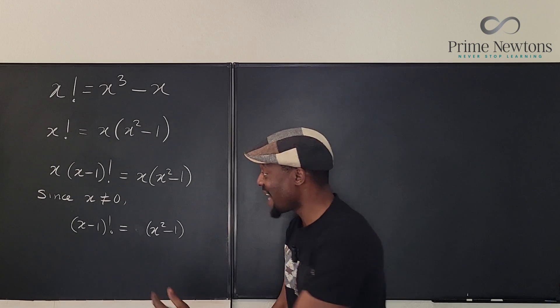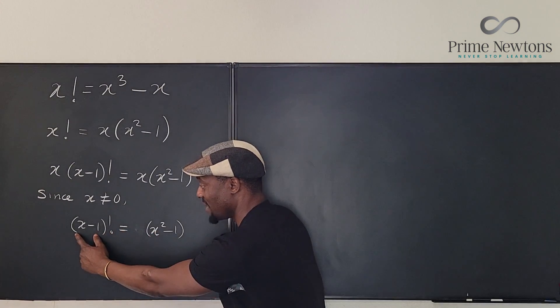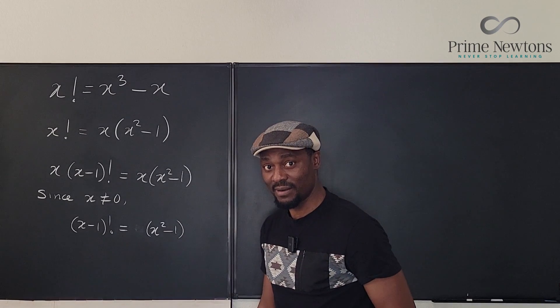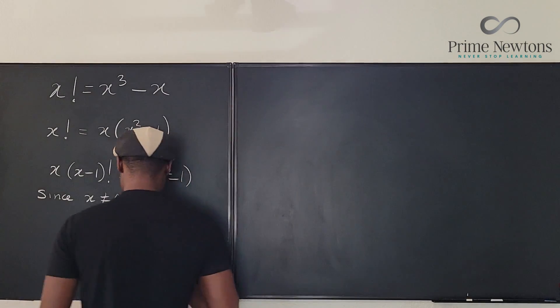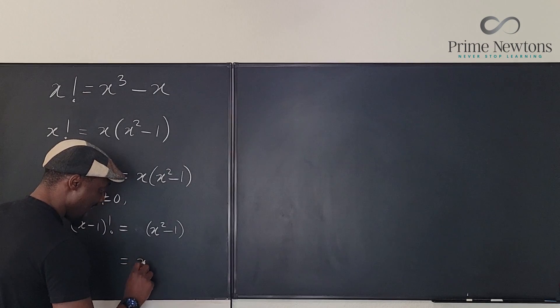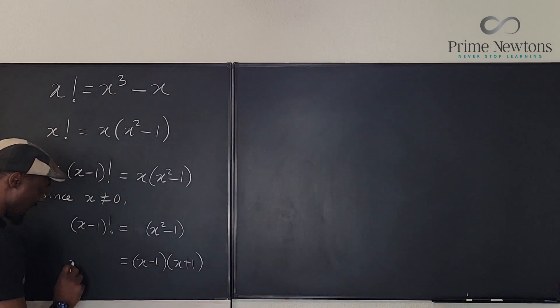And I can tell you that x minus 1 is hiding here. So there is x minus 1 here. There is also x minus 1 here. Because the right hand side, we can rewrite as x minus 1 times x plus 1. Here, we have x minus 1 factorial.